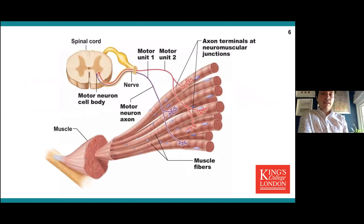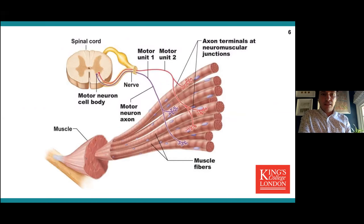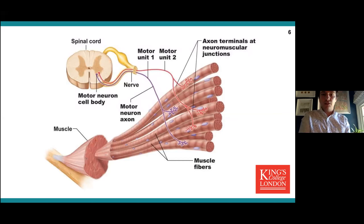The motor unit is the fundamental building block of the peripheral motor system. The cell body resides in the ventral horn of the spinal cord, and that anterior horn cell projects its axon distally towards the skeletal muscle. The motor unit includes that cell body, the axon, the axonal projections, and the terminal arborization, including the muscle fibers that they each connect to.